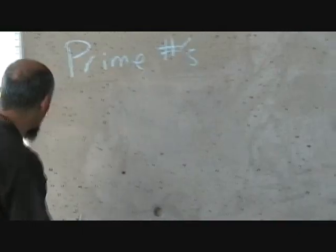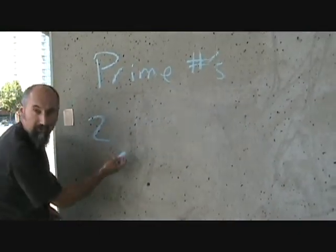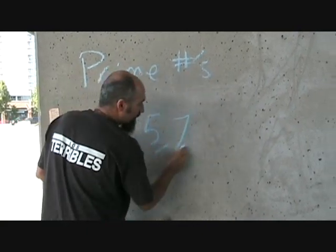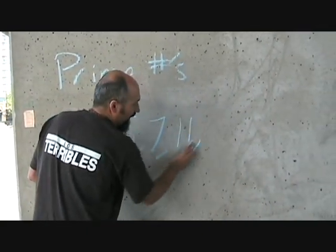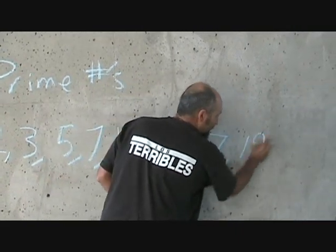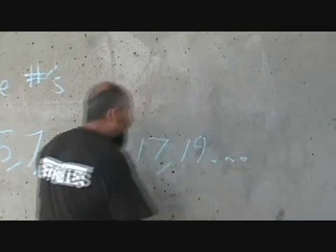One is not considered to be a prime number, so we'll avoid writing it down as a prime number. As far as you're concerned in high school, it's irrelevant. So we'll start with number two. Your prime numbers are two, three, five, seven, eleven, thirteen, seventeen, nineteen, and so on.